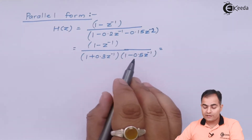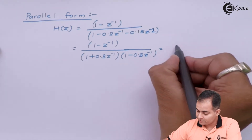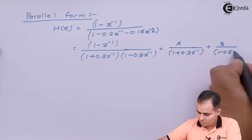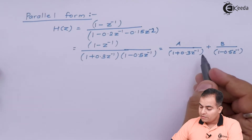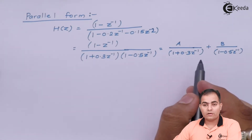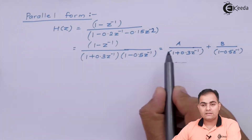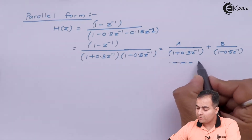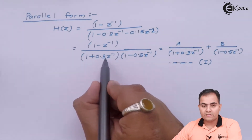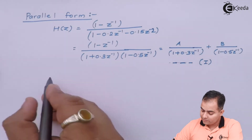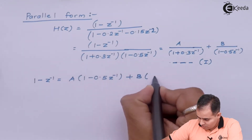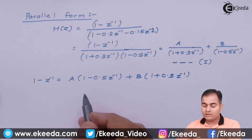Since we have two factors, we use two variables A and B for the partial fraction expansion. We calculate the values of A and B, then use them to plot the parallel structure based on that equation — call it equation number 1. We multiply the denominator from the left-hand side to the right-hand side to set up the partial fraction.